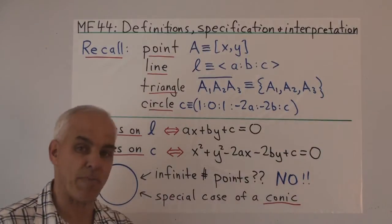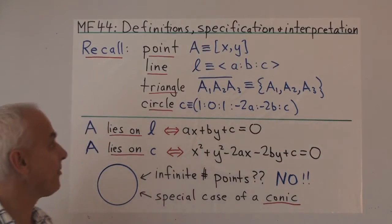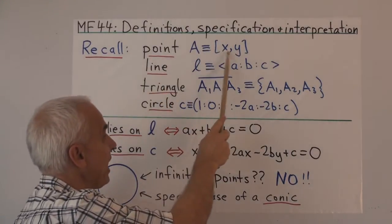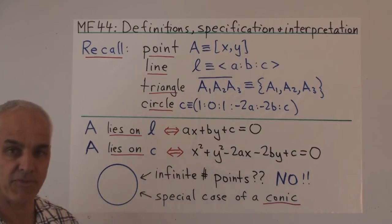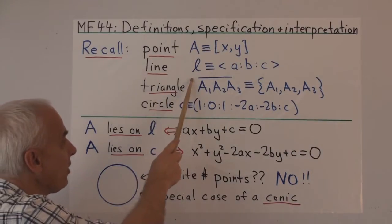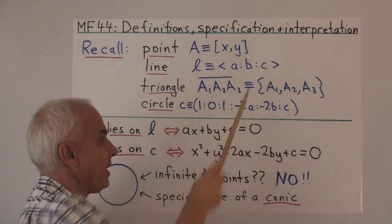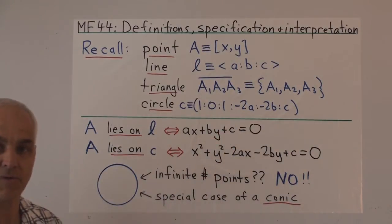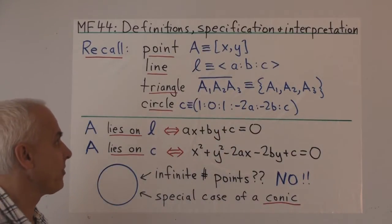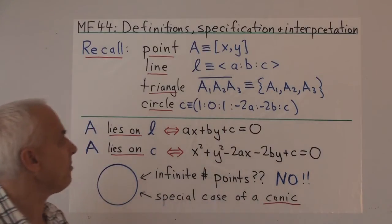To illustrate the ideas, let's go back to our basic concepts of geometry. So recall that we defined a point A to be a pair of numbers, actually rational numbers. We defined a line L to be a proportion A to B to C of rational numbers, with a certain condition on A and B not being both zero.